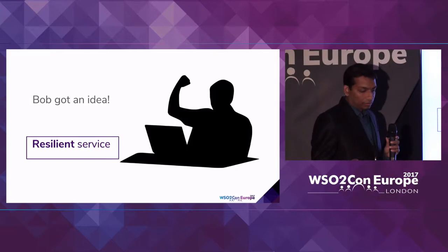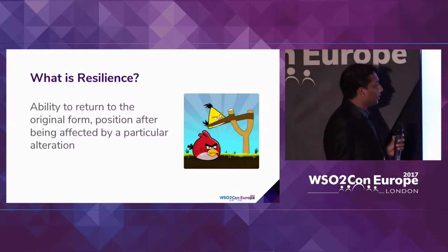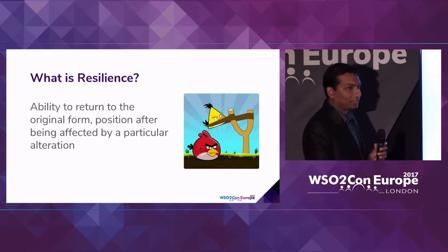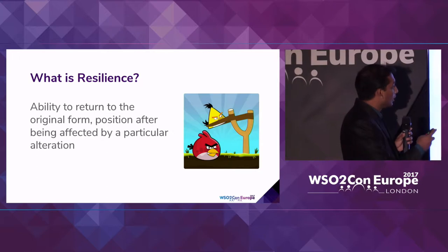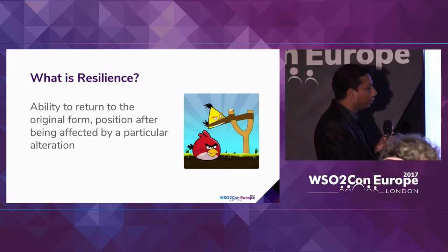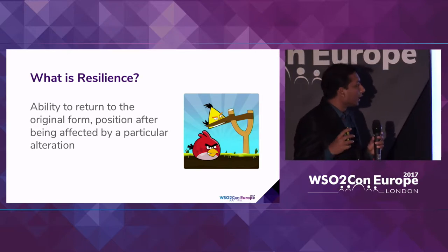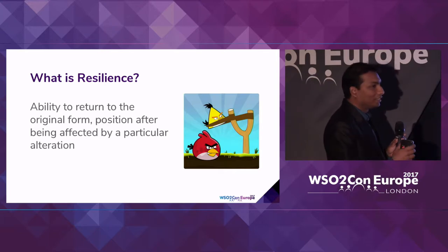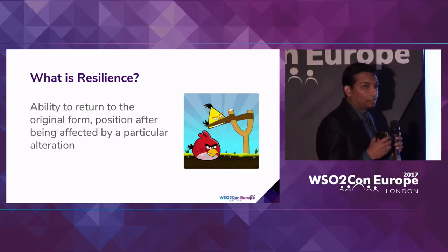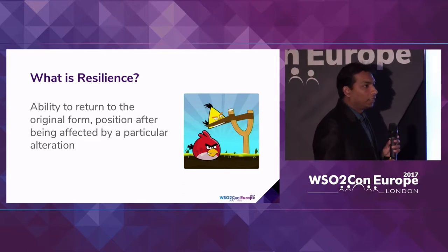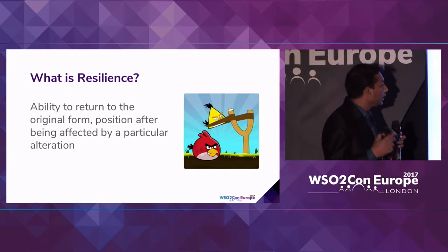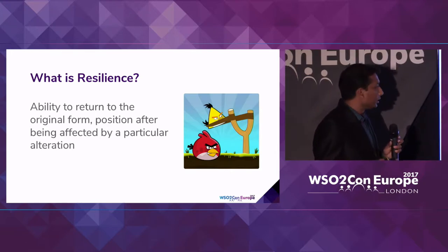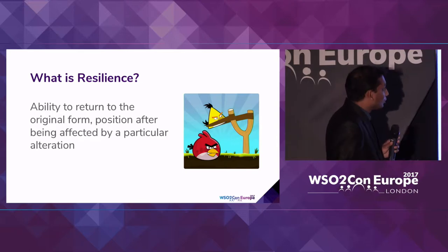So let's find out what resiliency is. This picture is taken from the popular Android game Angry Birds. There's a weapon called a slingshot or catapult with a rubber strip which you can pull. Once you pull it and release it, the Angry Bird is launched into the sky and the rubber strip comes back to its original position. The ability to come back to the original form after being affected by some alteration is called resilience — also known as recoverability.